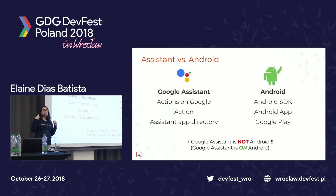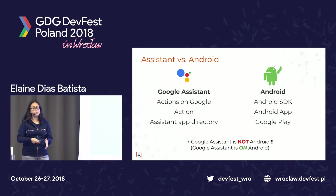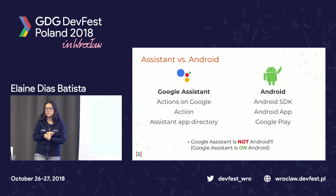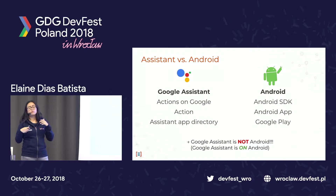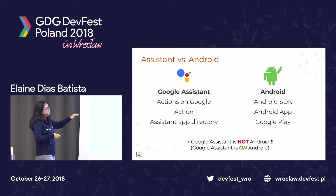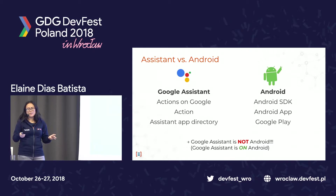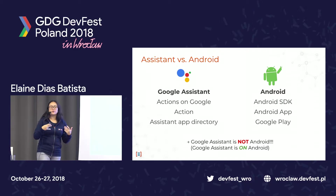The differences between Google Assistant and the Android world: on the Google Assistant, when you want to develop something, you rely on something called Actions on Google — the developer framework to develop applications for the Google Assistant — as opposed to the Android SDK. An app for the Google Assistant is called an Action, versus an Android app. The equivalent of the Google Play Store on the Android side is called the Assistant App Directory. So Google Assistant is not Android, but I get why people get confused.